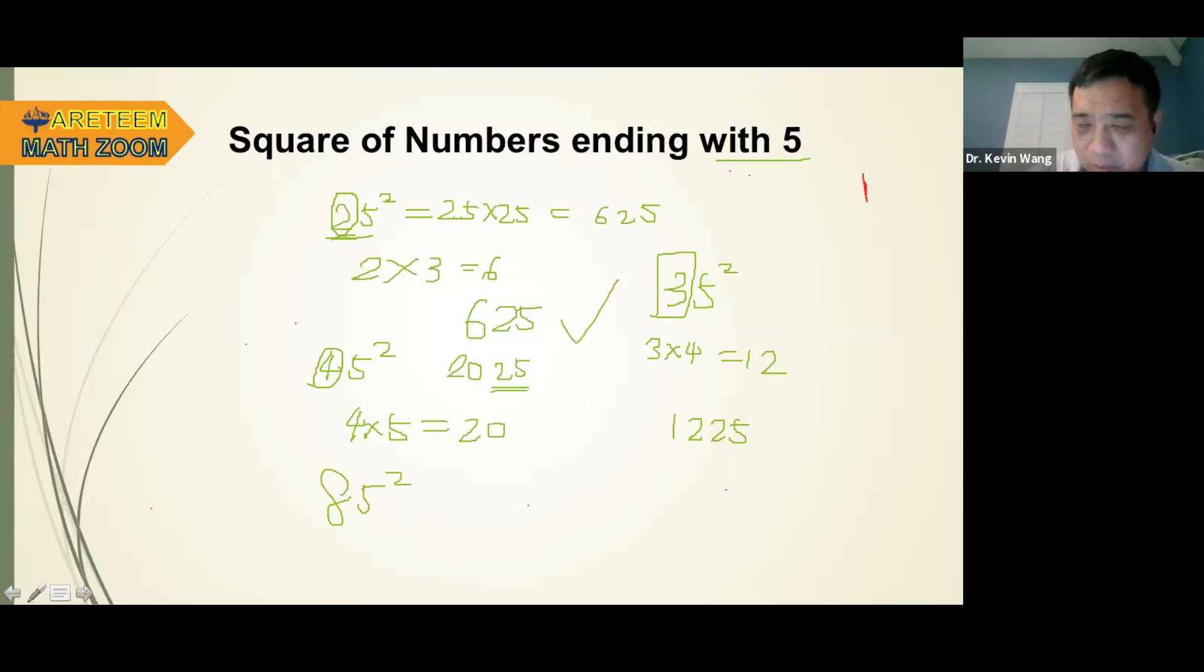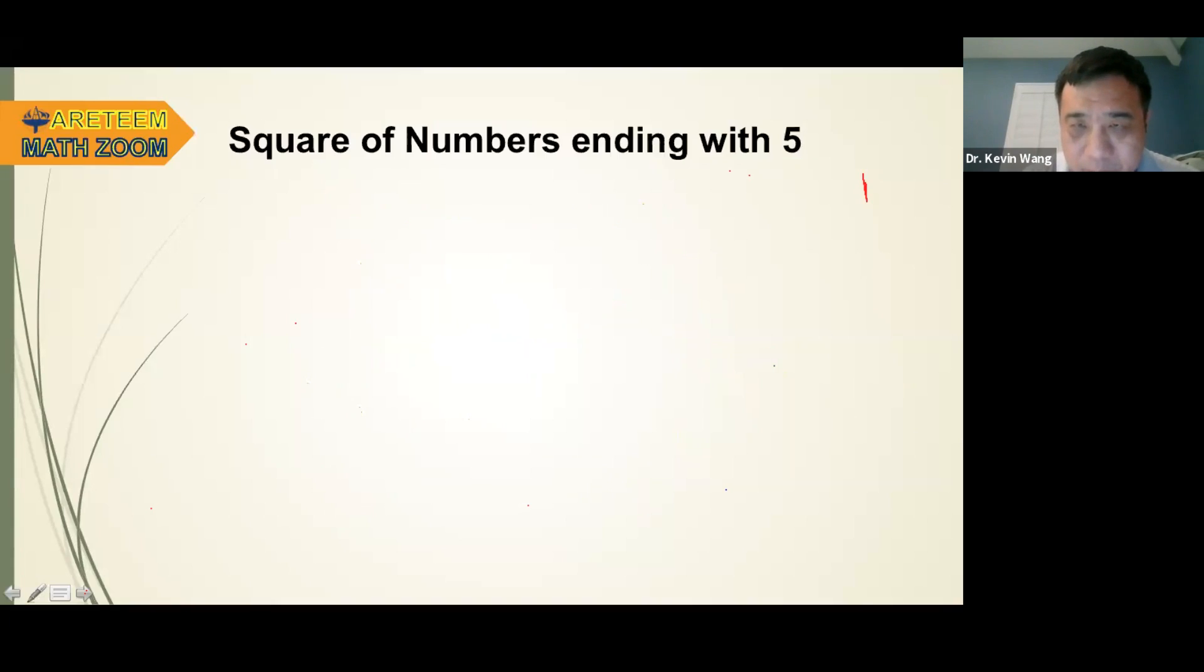So try another one. What about 75 squared? 5, 6, 2, 5. Now you guys are fast. Now you're fast. Now we can almost read everything here, but I'm going to give you something more challenging.